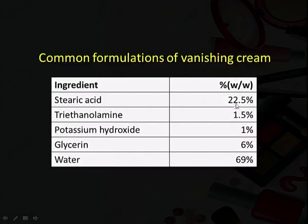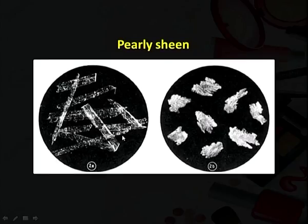A common formulation of vanishing cream: stearic acid roughly 22.5%, triethanolamine 1.5%, potassium hydroxide 1%, glycerin 6%, and the remaining ~69% is water, with some perfume and colour added. The pearly sheen fascinated cosmetic chemists because the sheen was associated with quality. It was eventually discovered that the pearliness was due to the formation of platelet-like sodium stearate crystals in the mixture, which reflected and refracted light to produce the sheen — very small crystals, like fine needles or small platelets, reflecting light.